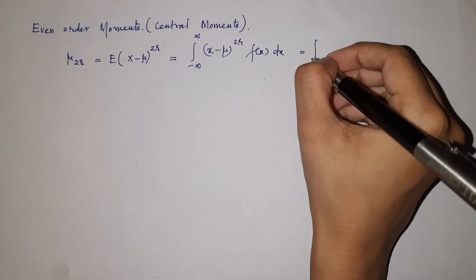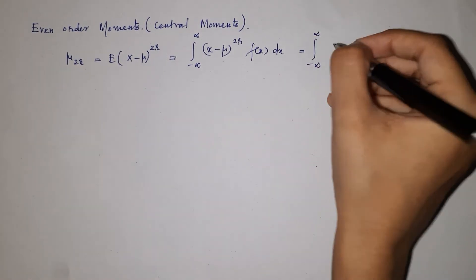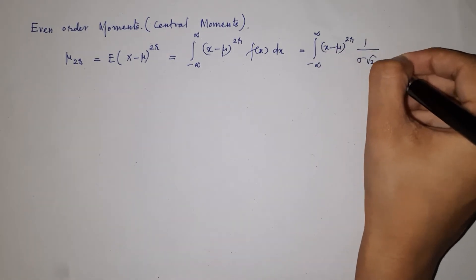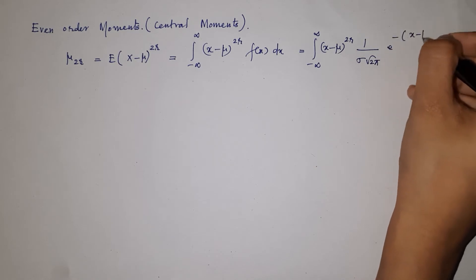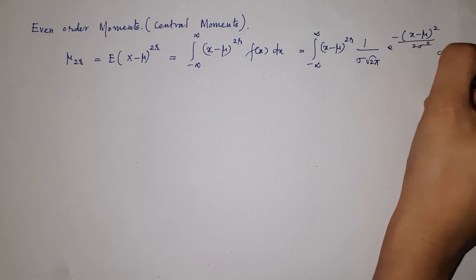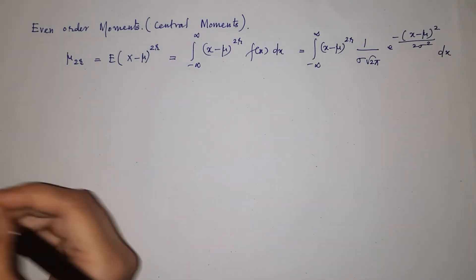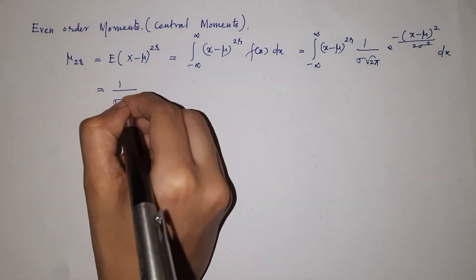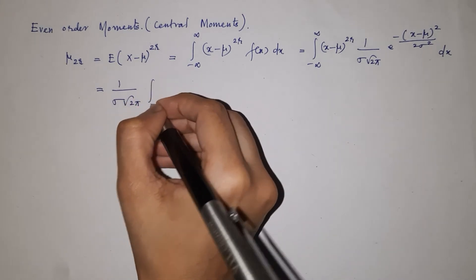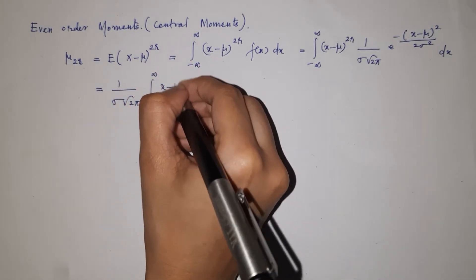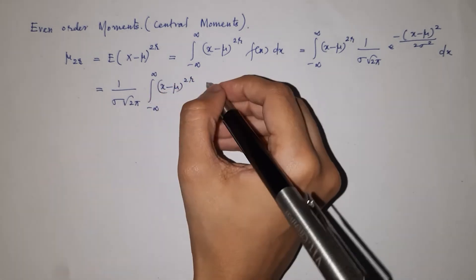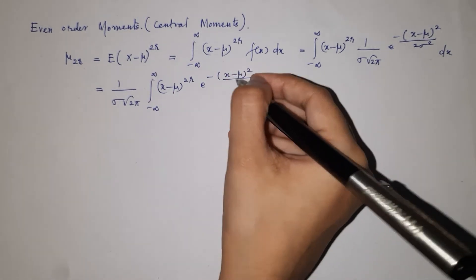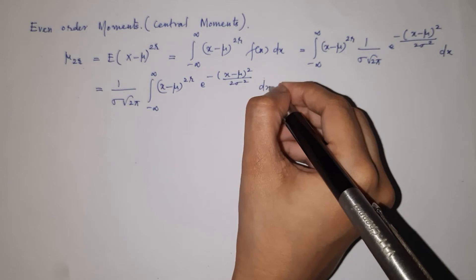Substituting the normal distribution PDF, this becomes the integral from minus infinity to infinity of (x minus mu) raised to 2r, multiplied by 1 over sigma root 2 pi, into e raised to minus (x minus mu) squared divided by 2 sigma squared, dx. Bringing the constant outside, we get 1 over sigma root 2 pi times the integral from minus infinity to infinity of (x minus mu) raised to 2r into e raised to minus (x minus mu) squared over 2 sigma squared, dx.